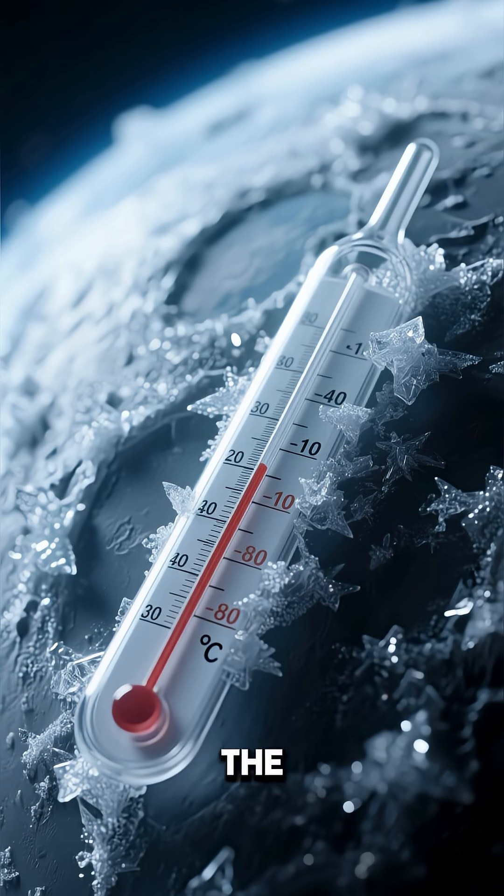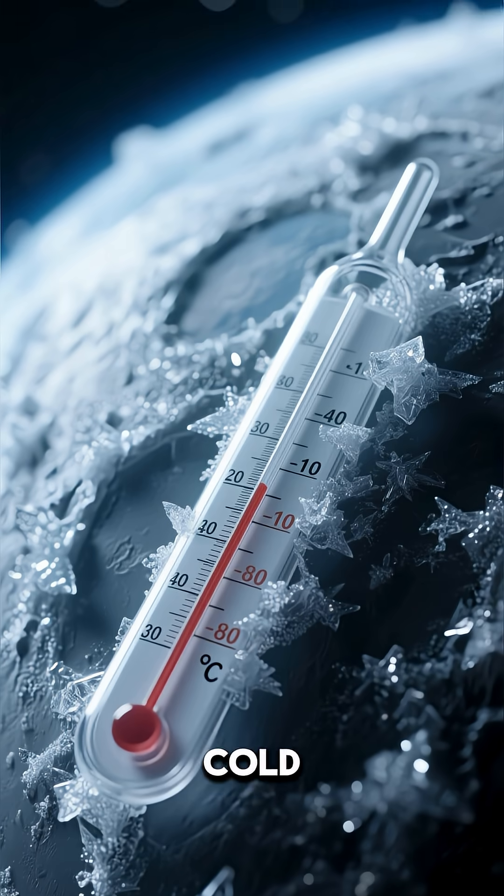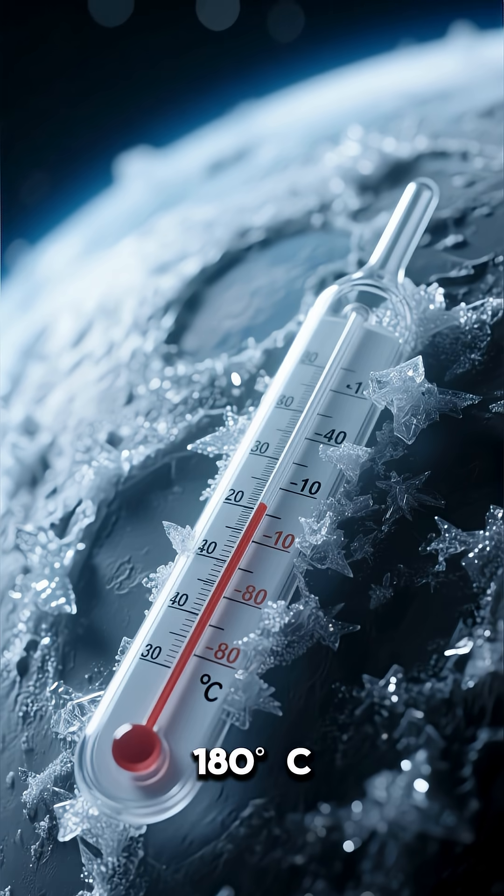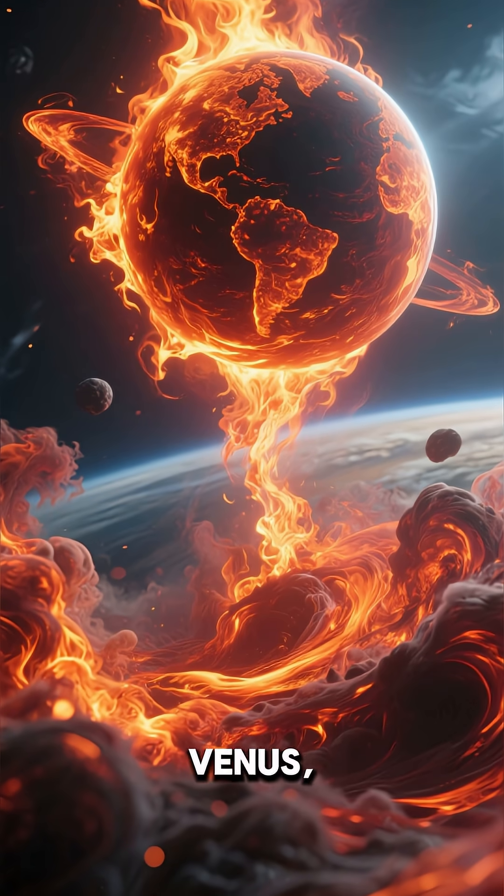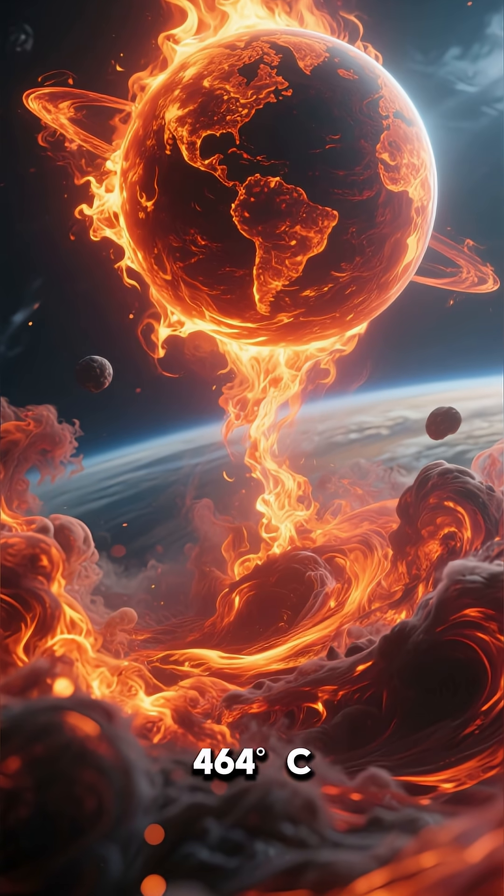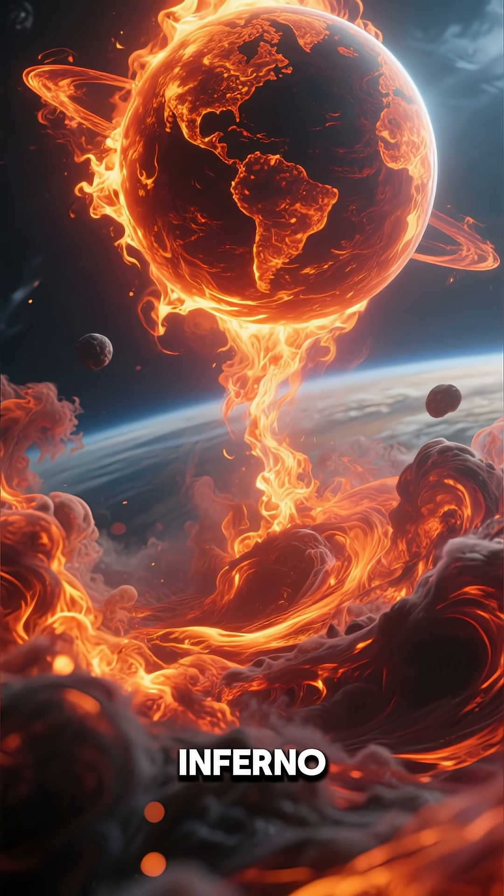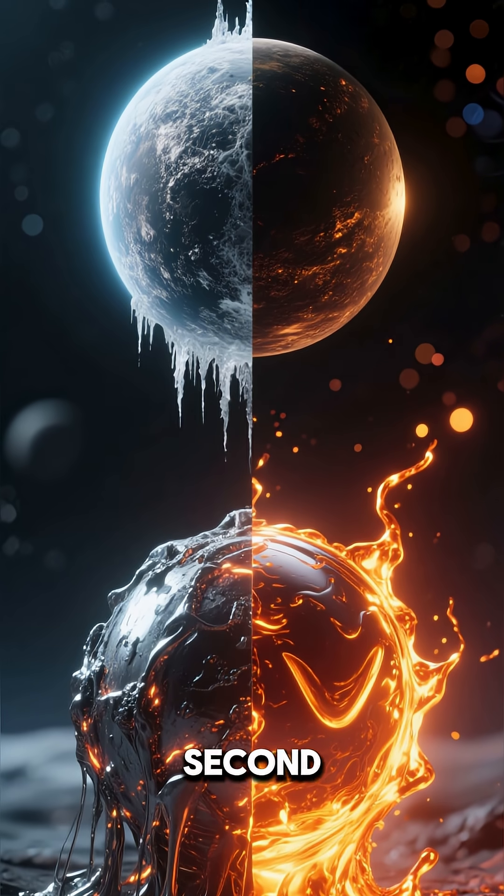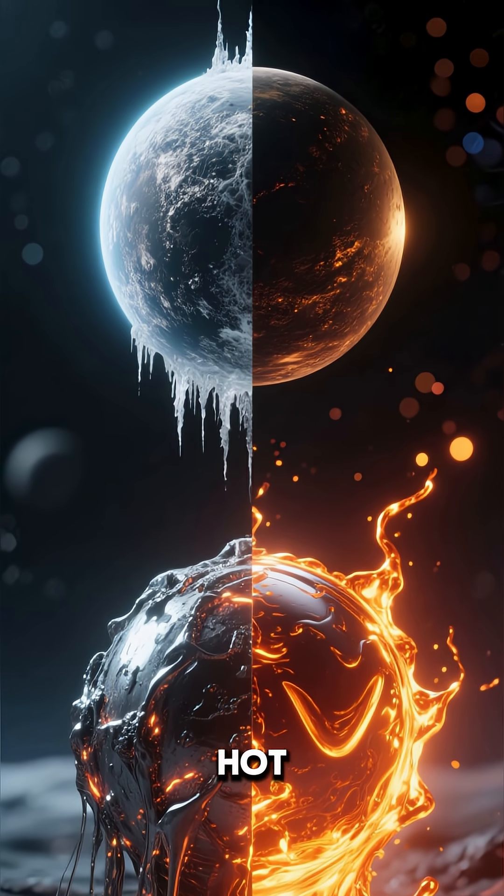The planet literally hugging the sun, Mercury, can get so cold it's minus 180 degrees Celsius. But the next planet over, Venus, is a permanent 464 degrees Celsius inferno. One planet freezes solid the second the sun sets, the other is hot enough to melt lead.